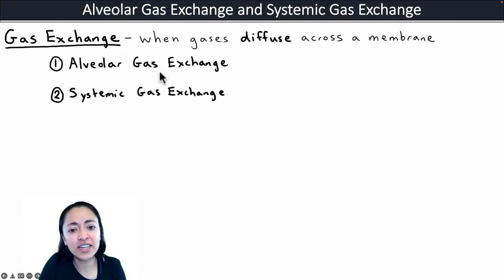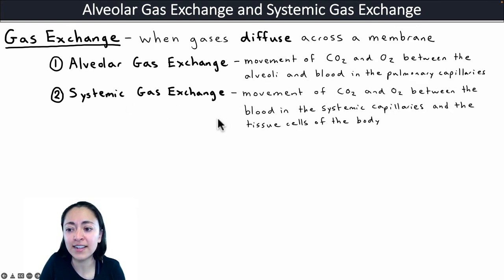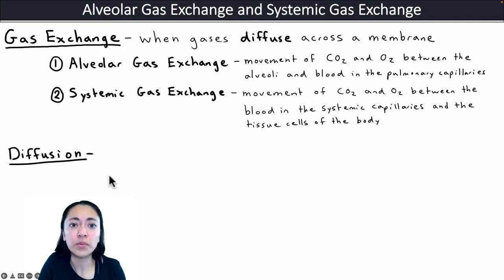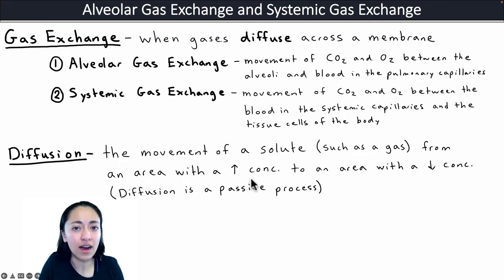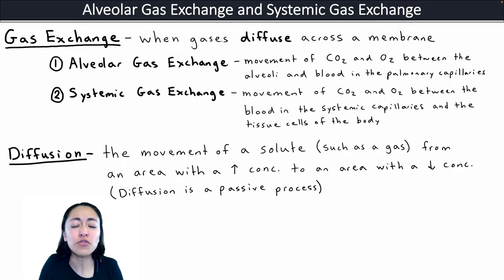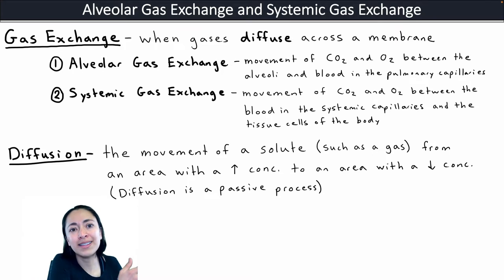Gas exchange is when gases diffuse across membranes within our body — either from the lungs into the pulmonary capillaries, or between the systemic capillaries and our tissue cells. Alveolar gas exchange is the movement of carbon dioxide and oxygen between the alveoli in the lungs and the blood in the pulmonary capillaries. Systemic gas exchange is the movement of carbon dioxide and oxygen between the blood in the systemic capillaries and the tissue cells of the body. Diffusion is defined as the movement of a solute, such as a gas, from an area of higher concentration to an area of lower concentration. Diffusion is a passive process — it doesn't require energy — and molecules will continue moving until there's equilibrium between the two areas.